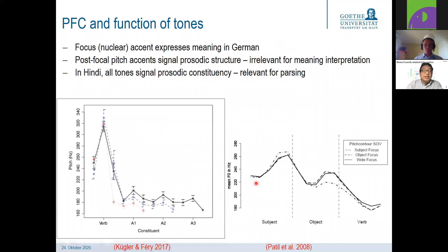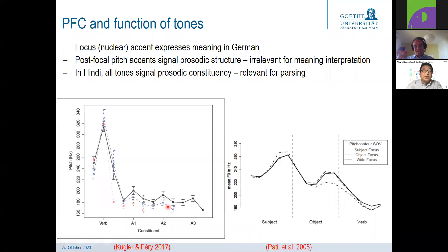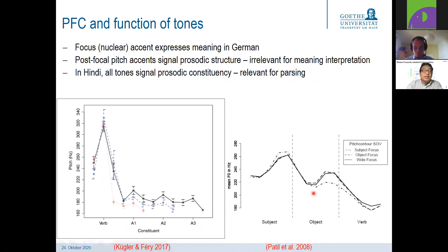The nuclear accent in German and English expresses that information is important to take into the speaker-hearer common ground. Post-focal pitch accents realized in a compressed pitch register do not add meaning to that intonation. In Hindi, the typical rises on a phrase are realized, as in Finnish and other languages — these tones seem to have an implication for the parsing of individual constituents, providing a function needed for the listener to parse the sentence. A recent study on Hindi post-focal compression used contrastive ellipsis structures with subject, indirect object, direct object, and verb sentences.